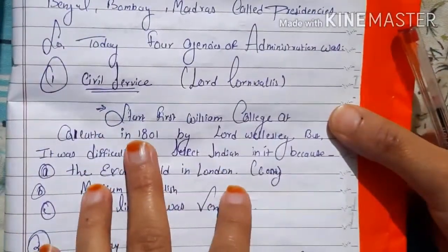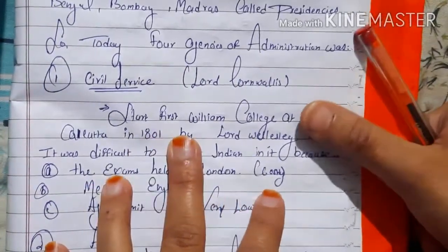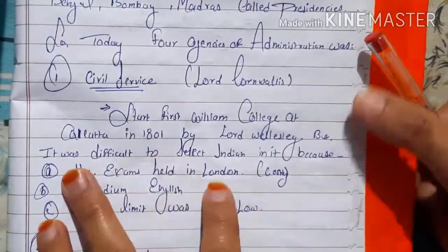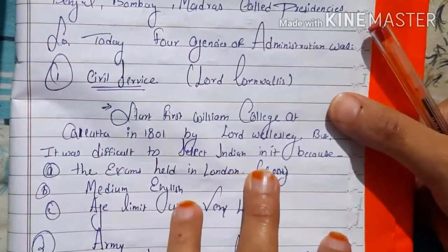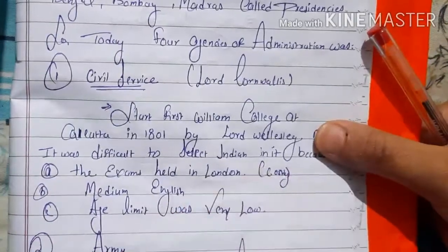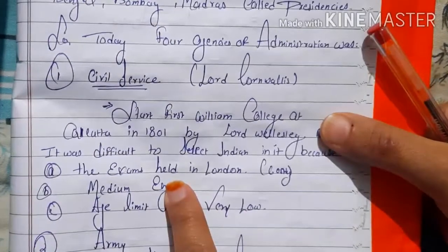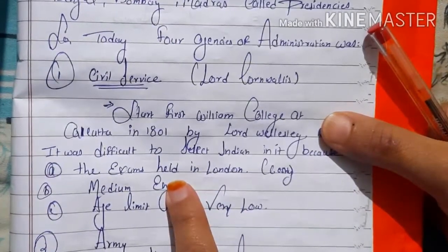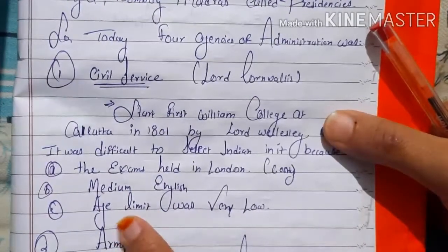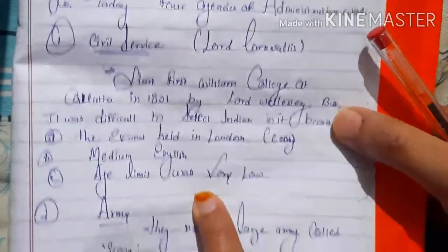The first agency was civil service, started by Lord Cornwallis. The first college was established at Calcutta in 1801 by Lord Wellesley. However, it was difficult for Indians to be selected — the civil service exam was held in London, which was very costly, the age limit was very low, and the medium of answering was English. As a result, Indian persons were largely excluded from civil services.